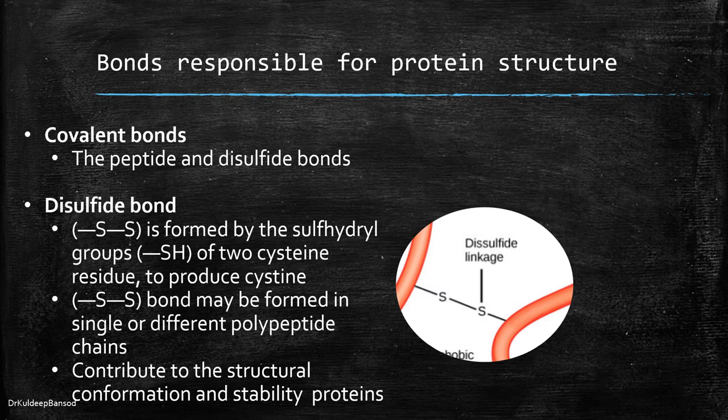As shown in figure, here is one cysteine molecule and here is another cysteine molecule that produces a disulfide linkage.